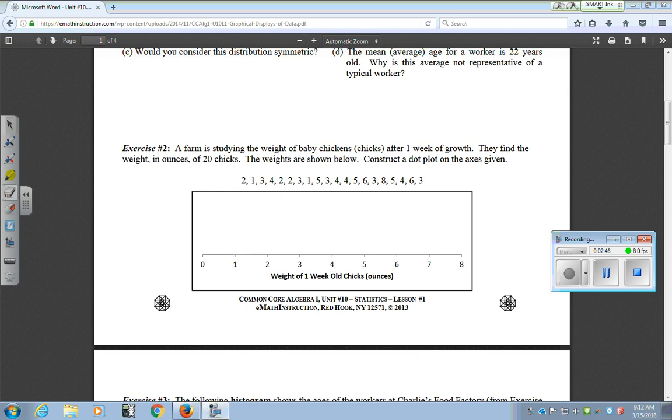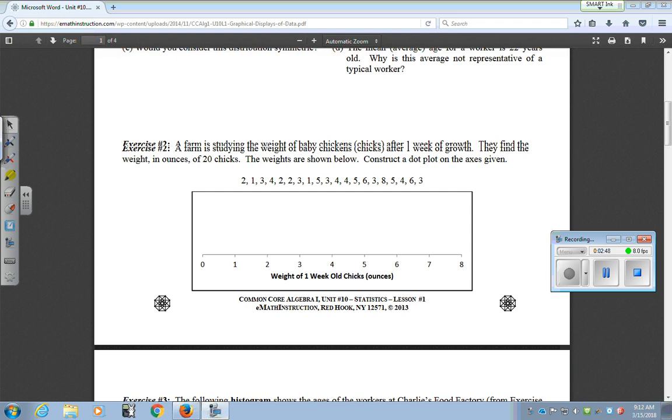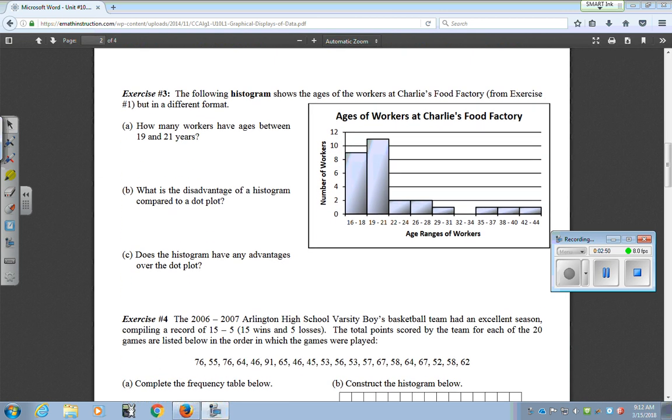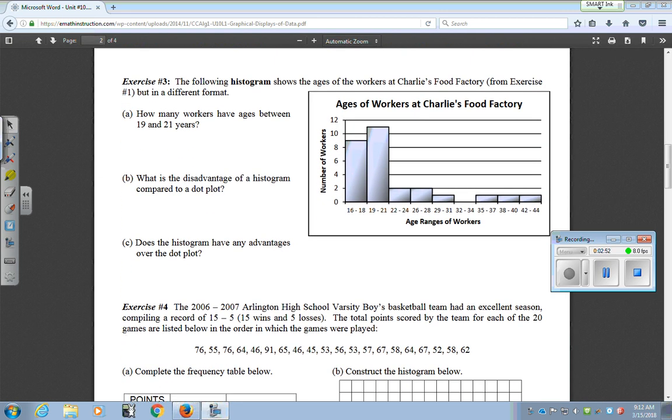Now we'll move on to exercise three. Exercise three talks about a histogram. We're going to use the graph here to help us answer these questions. In this case, how many workers have ages between 19 to 21? Well, you want to look at the 19 to 21 column. In this case, it's between 10 and 12, which would be 11.